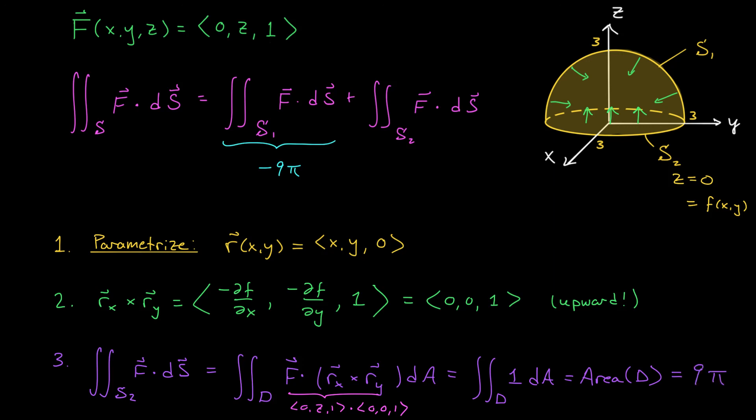Putting this all together, we have a value of −9π for our first integral, a value of 9π for our second integral, and therefore the surface integral over this entire closed surface is the sum of these two quantities, which is 0.